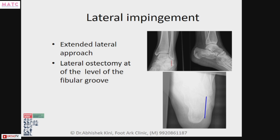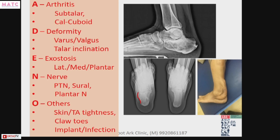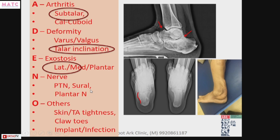Another patient — something similar. There is arthritis, talar inclination is gone, there could be anterior impingement, there are lateral exostoses, no nerve involvement, and the skin is bad over here.